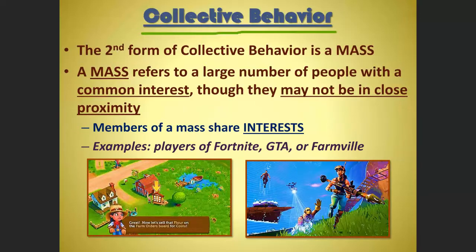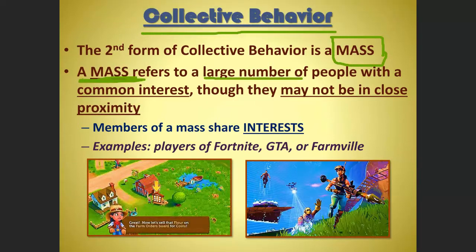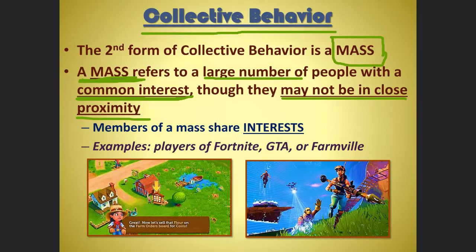The second form of collective behavior is the mass. You may have heard 'mass media' — mass refers to a large number of people with a common interest, though they may not be in close proximity. Unlike a crowd, which is usually in the same place at the same time, a mass doesn't have to be in the same place. The key is that they share interests.